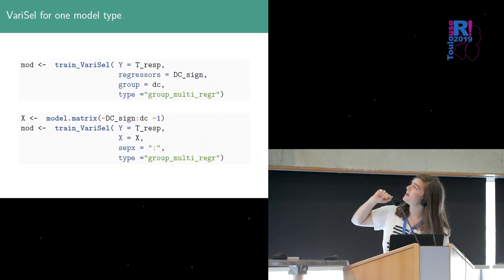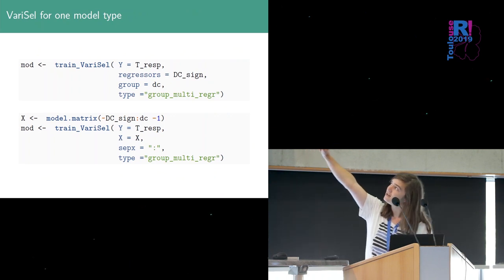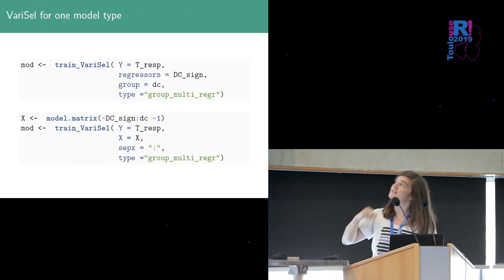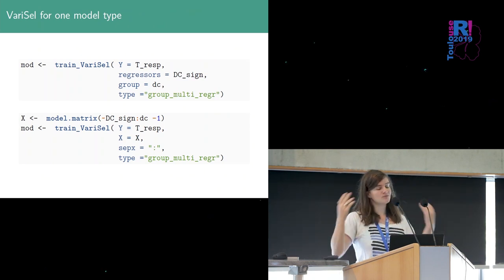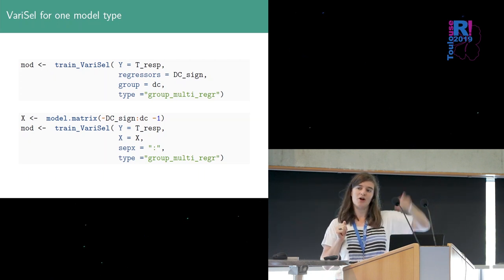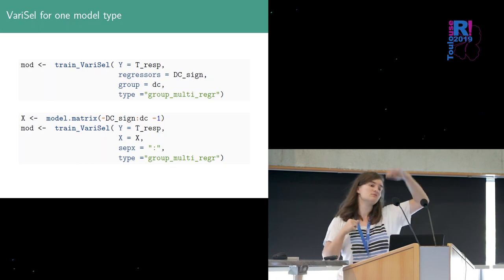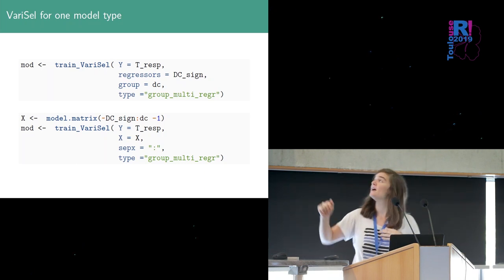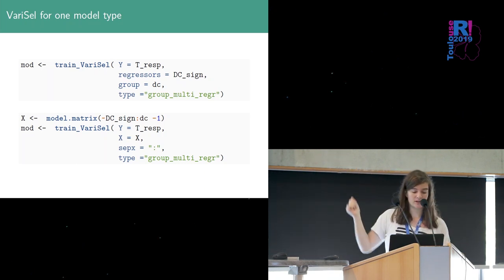So this is the main function of the package traintVaricel so we can give it Y which is the response matrix X matrix of regressor here it's the value of the DC signal and group which give for each line if it's a cDC2 cell or another cell and the type is the type of model we want to do. At the bottom it does exactly the same but if we have X which is already the design matrix complete.